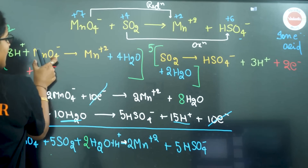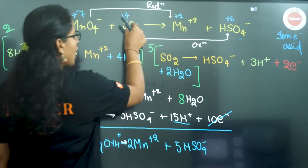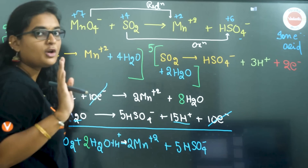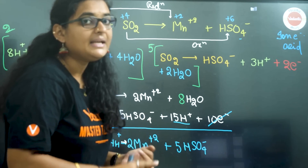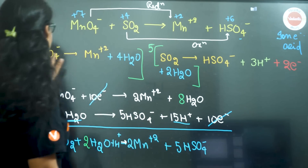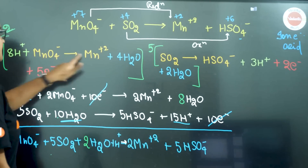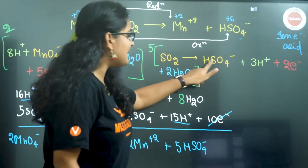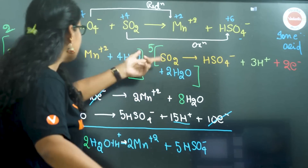So, first the reduction half-reaction: MnO4− gives Mn2+. And for oxidation: SO2 gives HSO4−. Next step: balance atoms other than oxygen and hydrogen. Manganese: 1 on each side — no worries. Sulfur: 1 on each side — no worries.